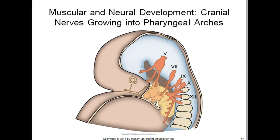The posterior third of the tongue is innervated by the ninth cranial nerve. The anterior two-thirds of the tongue is innervated by the seventh nerve. Motor efferent innervation to the intrinsic muscles of the tongue comes from the twelfth nerve, the hypoglossal.